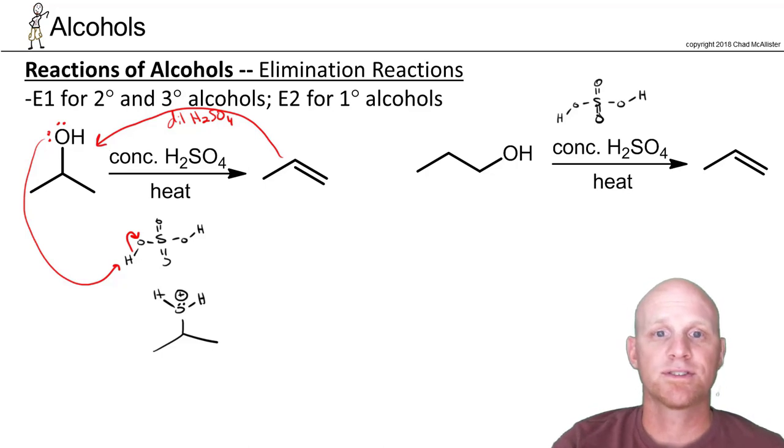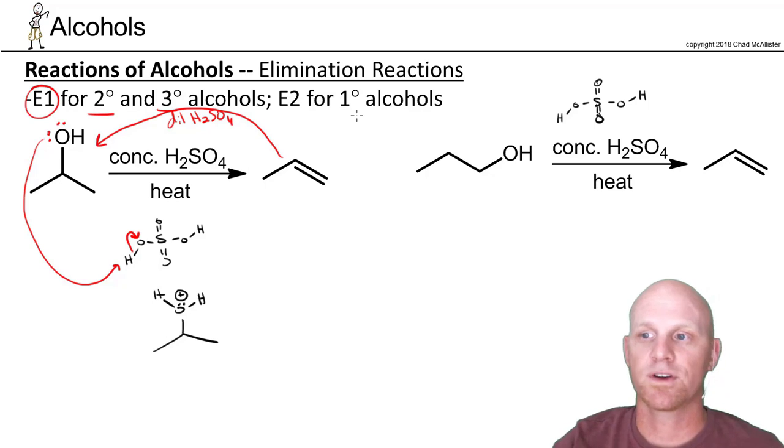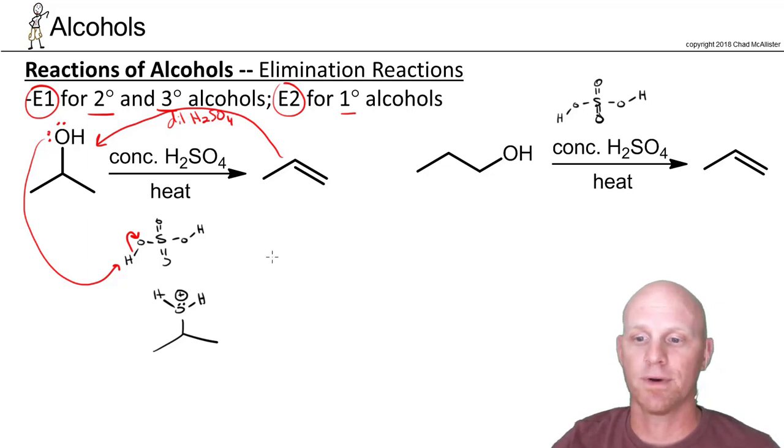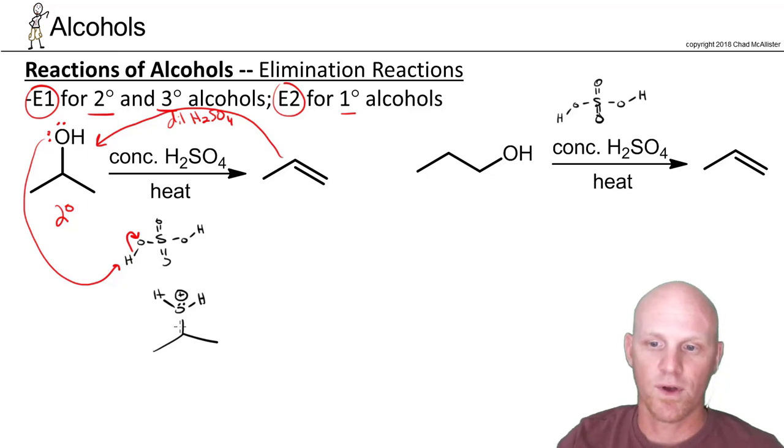It turns out for secondary and tertiary alcohols, they go by the E1 mechanism, whereas primary alcohols are going to go by E2, since E1 is generally not possible for primary alcohols, not being able to form a primary carbocation. But with our secondary alcohol that we're starting with here, we can form a secondary carbocation, and your next step is the leaving group just leaves to form that carbocation.